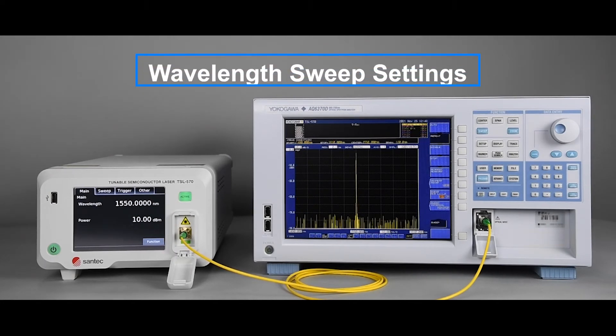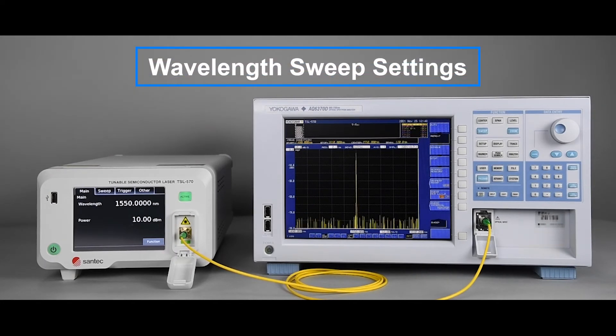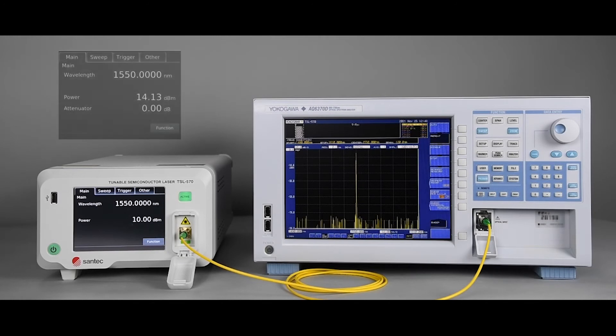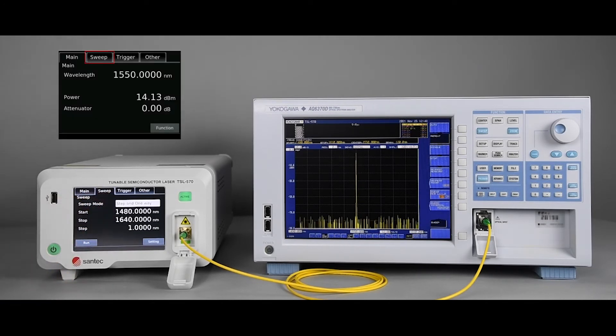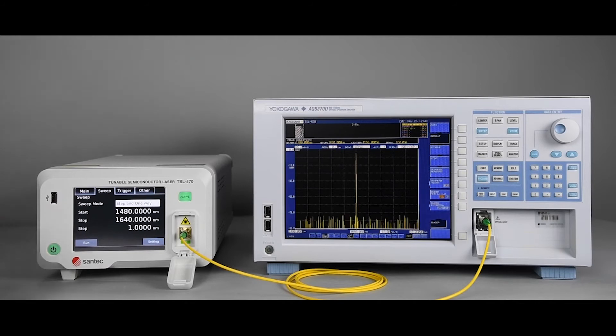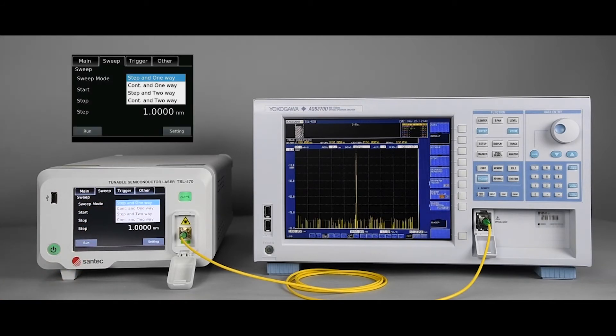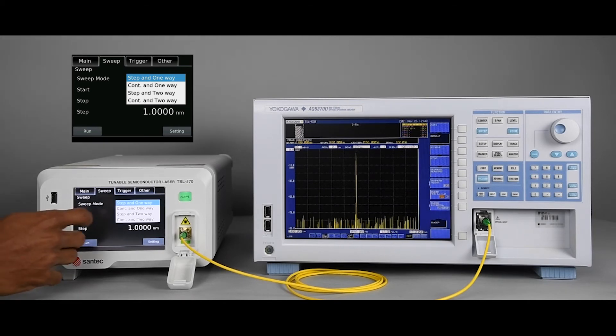Now, let's set the TSL 570 to perform a wavelength sweep. For this, we go to the Sweep tab. First, we have to select a sweep mode from the four available sweep modes: one-way step mode, one-way continuous mode, two-way step mode, and two-way continuous mode. In this tutorial, we'll set the TSL for one-way continuous mode.